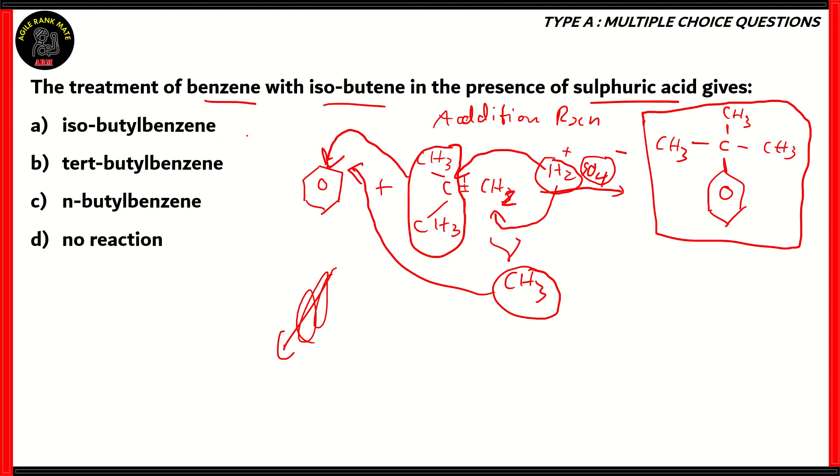If it were isobutylbenzene, then it would have a different structure. N-butylbenzene is also different. Therefore, since there is a reaction occurring here called the addition reaction, option D is also incorrect. The right answer is option B, tert-butylbenzene. This particular product that we get by the treatment of benzene with isobutene in the presence of sulfuric acid is called tert-butylbenzene.